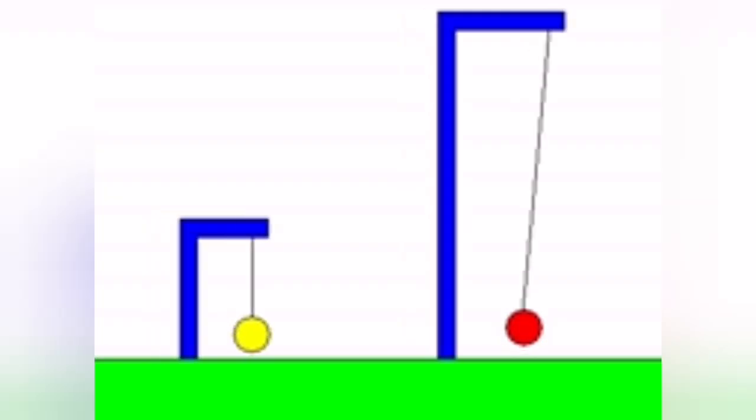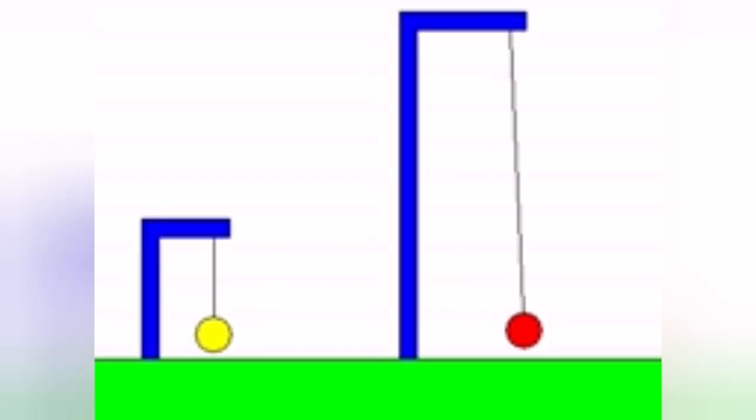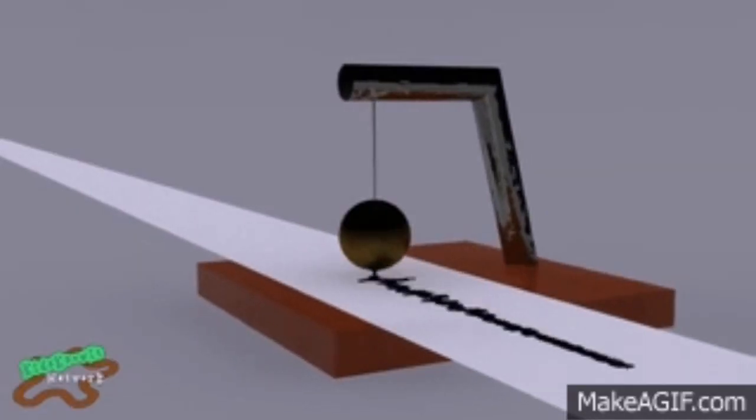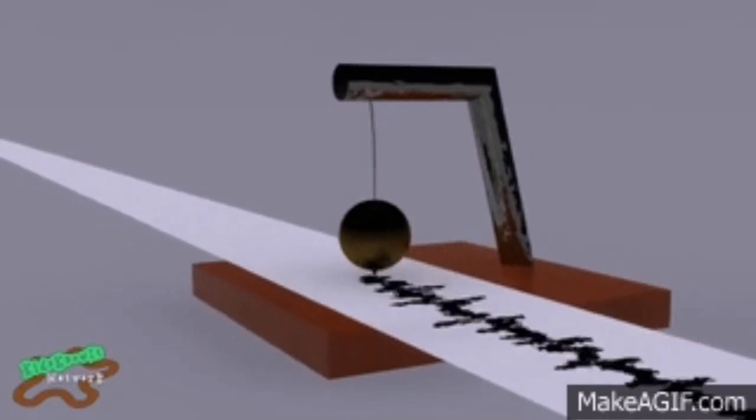A seismograph is practically a mass which, due to inertia, stays in its place when the base of it and the land which is attached to it moves.